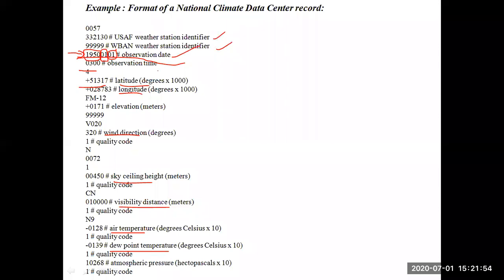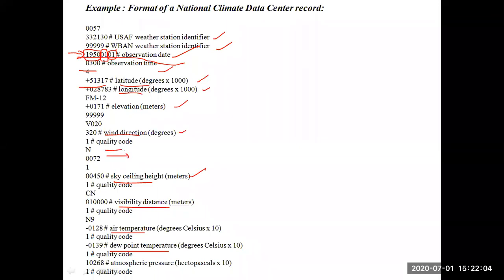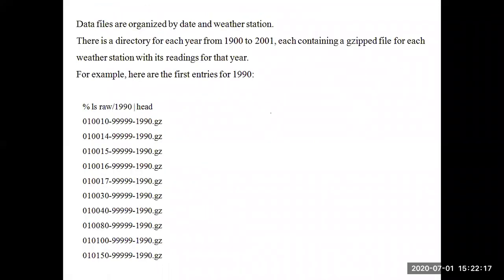Many parts are unknown to us, so we have only highlighted the parts we can understand — station identifier, date, time, latitude, longitude. We have highlighted only those points. The aim here is to show you what one line contains. All the data will be in a single line only.